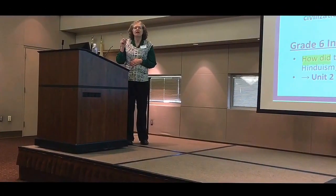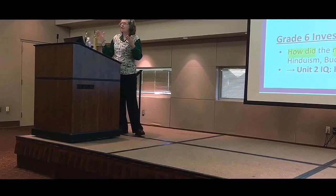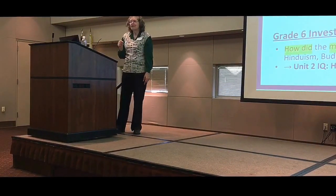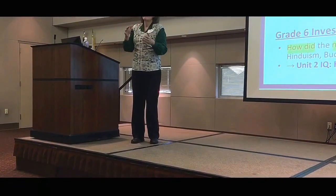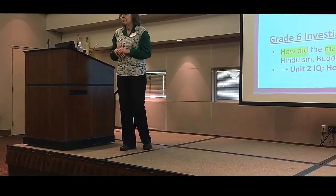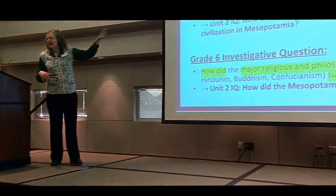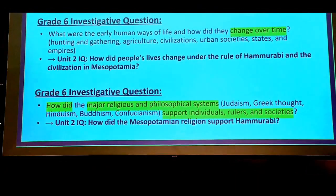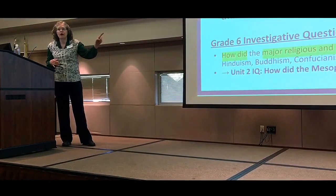This lesson deals with two investigative questions: What are the early human ways of life and how did they change over time? And the unit two question — for the unit on Mesopotamia and Egypt — is: How did people's lives change under the rule of Hammurabi and the civilization in Mesopotamia? Hammurabi writes a really early law code. The question you're going to ask students is how would that code have changed their lives. Then the second question is: How did the major religious and philosophical systems support individuals, rulers, and societies? And the unit two question is: How did the Mesopotamian religion support Hammurabi?